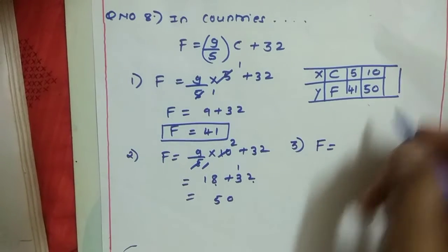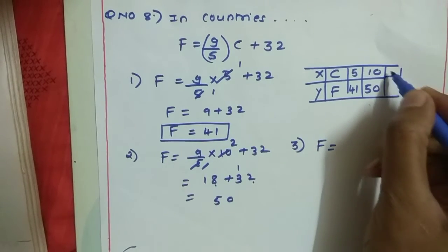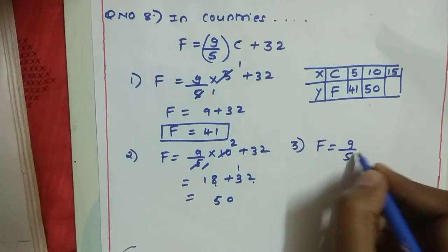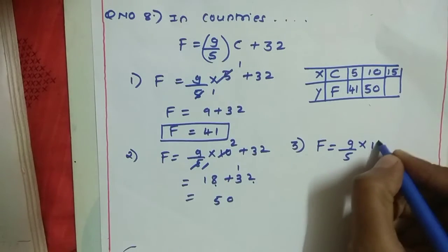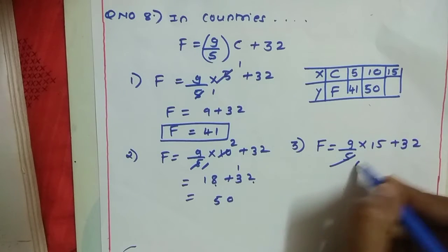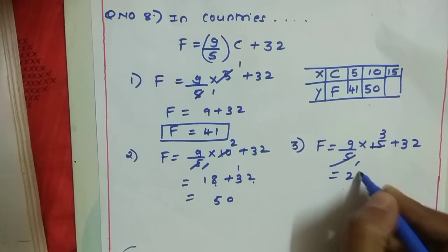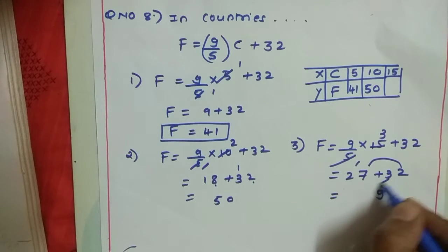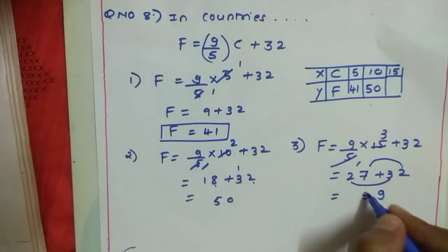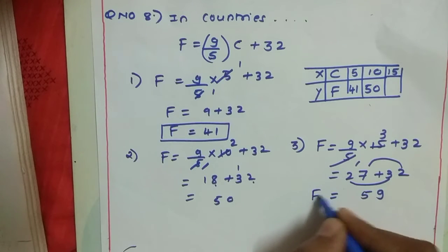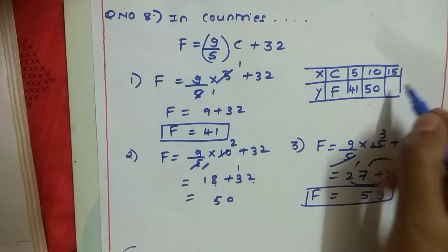Now the third value: put C as 15. F = 9/5 × 15 + 32. 15 divided by 5 is 3, so F = 9 × 3 + 32 = 27 + 32 = 59. So we got 59 Fahrenheit.